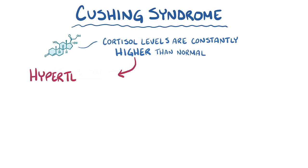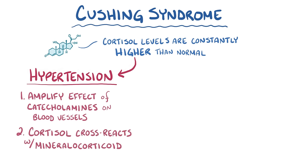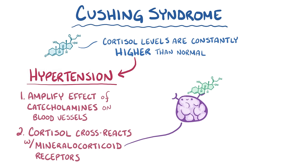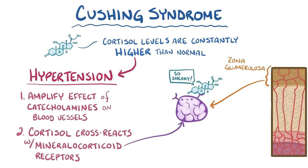In addition, high cortisol levels cause hypertension for two reasons. First, they amplify the effect of catecholamines on blood vessels. And second, cortisol starts cross-reacting with mineralocorticoid receptors, which normally only bind the related steroid hormone mineralocorticoid, secreted from the zona glomerulosa layer of the adrenal cortex. Because cortisol is structurally similar to mineralocorticoid, it can bind to that receptor and trigger the mineralocorticoid effect, which is mainly to increase blood pressure by retaining fluid.